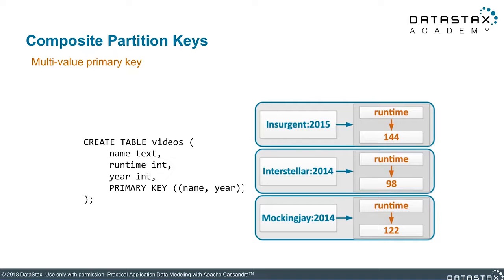Composite partition keys are used when you need to combine two values together to make one single partition key. If you look at how the primary key is written here, 'name' and 'year' are contained inside parentheses, meaning we're combining them together. The very first value in the primary key is the partition key, and when you wrap values in parentheses, those become one combined value. So 'name' and 'year' together — like 'Insurgent 2015' — form the partition key, used for placement in the cluster. You can include more than two values, but you'll need to provide all of them every time you use a where clause.